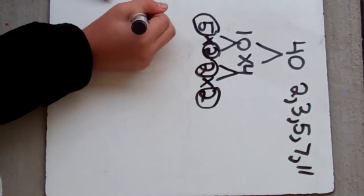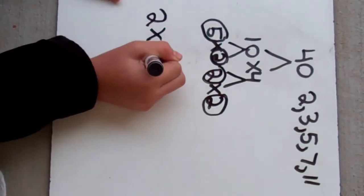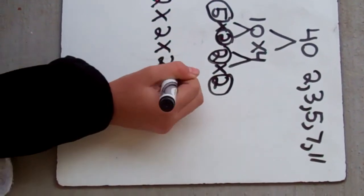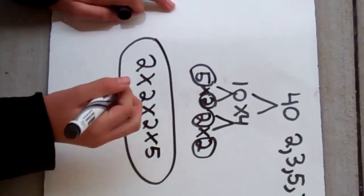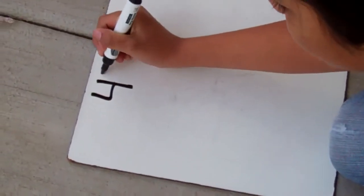Now, my answer's going to be two times two times two times five. And there is the answer of a number like forty. That's a good number.